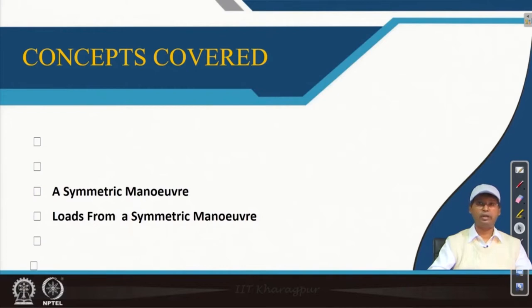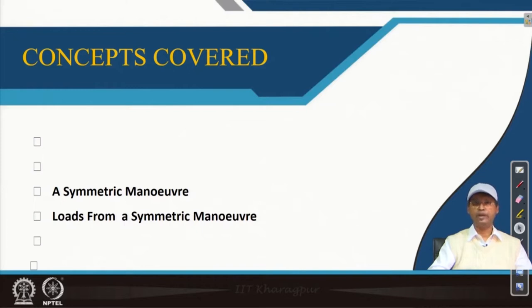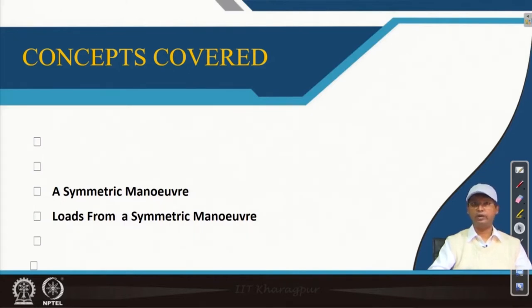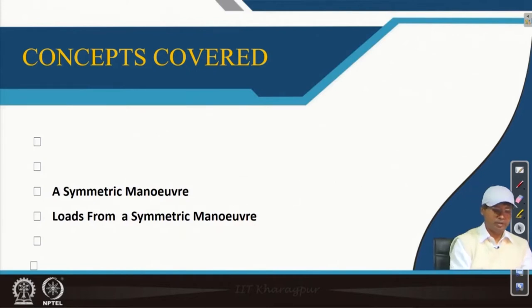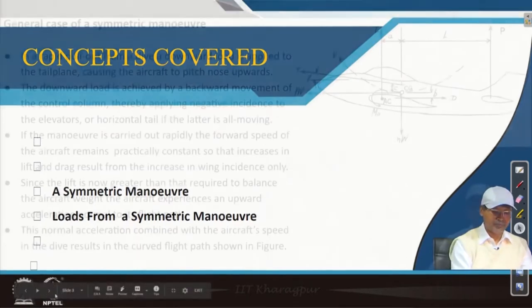We have seen the development of aircraft structures since the beginning by the Wright brothers. Then the flight envelope and load factor for various states we have already learned. Today we will learn what a flight manoeuvre is, and specifically the symmetric flight manoeuvre. Along with that we will solve one problem to find out the loads. Today's lecture will cover symmetric manoeuvre, loads from a symmetric manoeuvre — we will form the equations and then solve one example.